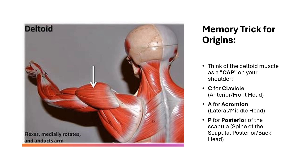There are three heads and three different origins. You can remember these with the acronym CAP, because it's a cap on the shoulder. C is for clavicle, where the anterior head originates. A is for acromion, where the lateral head originates. And P is for the posterior — the spine of the scapula — where the posterior head originates.